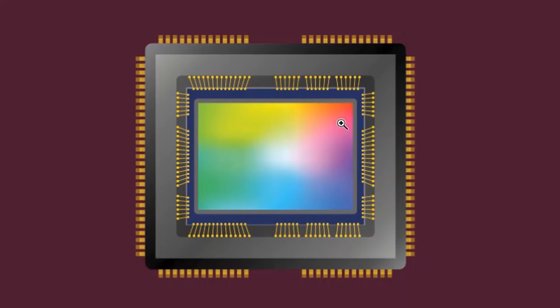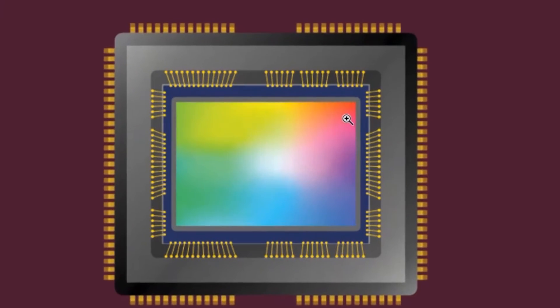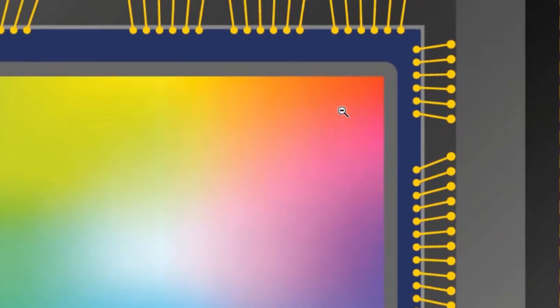When light hits these small pixels, they are programmed to convert the light into signals and then into an image. When the image is created, it goes to the storage device such as a memory card or computer. All these millions of tiny pixels are individually capable of processing light into signals.